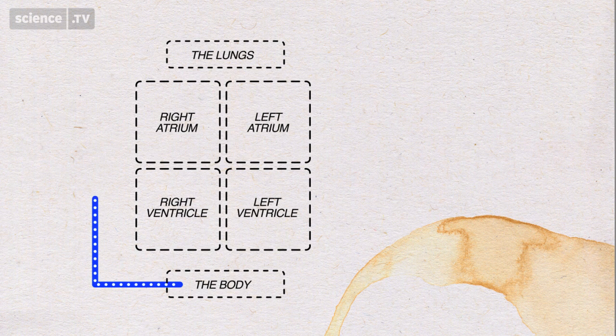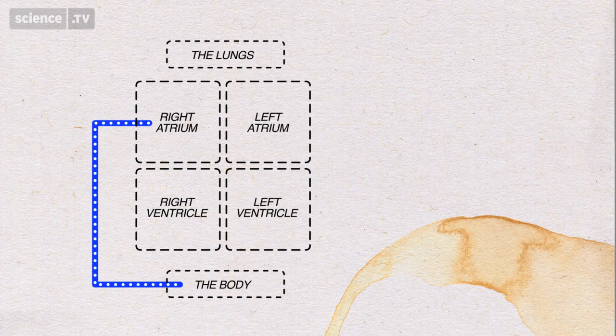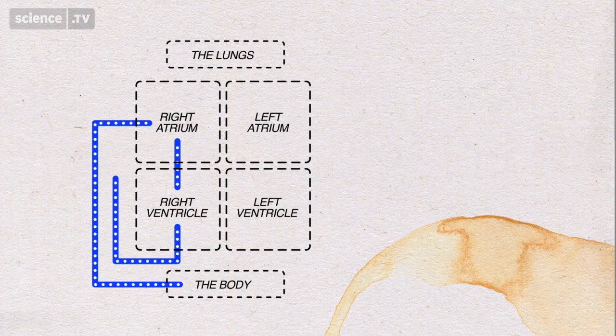The first bit of the heart it goes into is called the right atrium. This is a weak little sack that just needs to collect the blood and move it on to the next bit of the heart, and that's the right ventricle, which has the job of sending the blood up to the lungs to pick up oxygen.